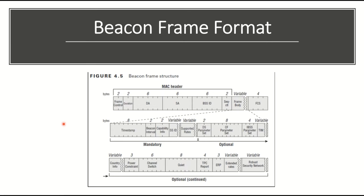In the beacon frame format, you can see the MAC header followed by the frame body. Fields include frame control, duration, destination address, source address, and BSSID. The size of each field is mentioned in bytes. Some fields are mandatory and others are optional, which we'll discuss in the next slides.